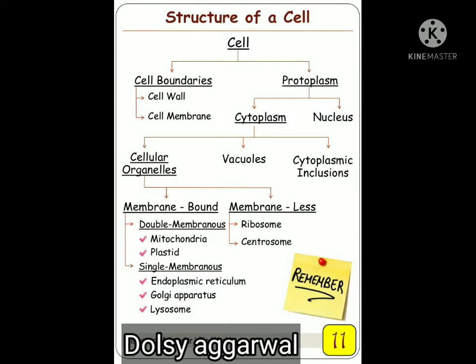Cell organelles can be classified as membrane-bound and non-membrane-bound. Membrane-containing organelles are of two types: double membrane-bound organelles and single membrane-bound organelles. Double membrane-bound organelles include mitochondria and plastids. Single membrane-bound organelles are endoplasmic reticulum, Golgi complex, and lysosome. Membrane-less organelles — where the plasma membrane is absent — are ribosomes and centrosomes.